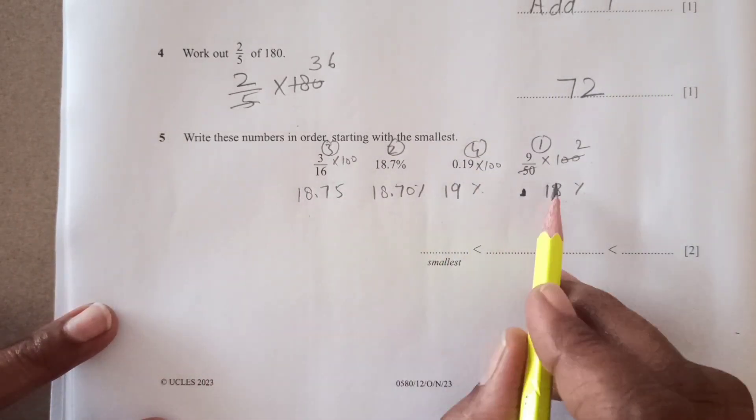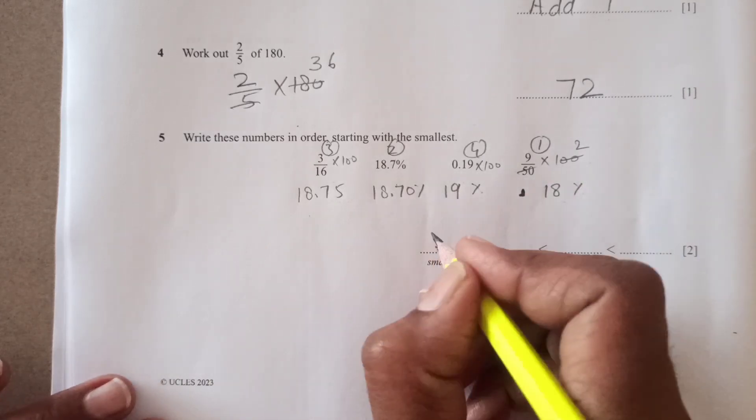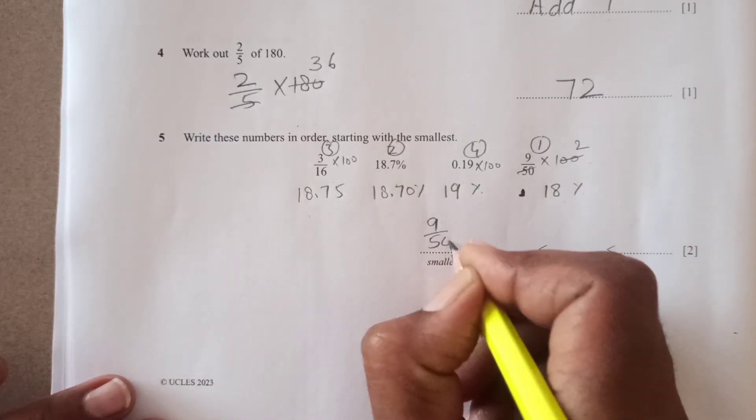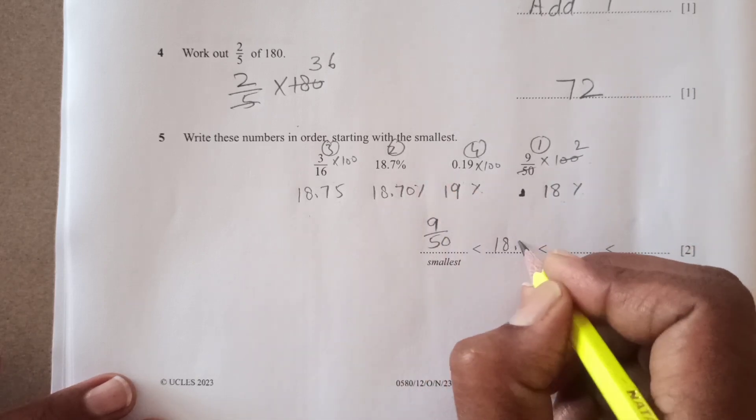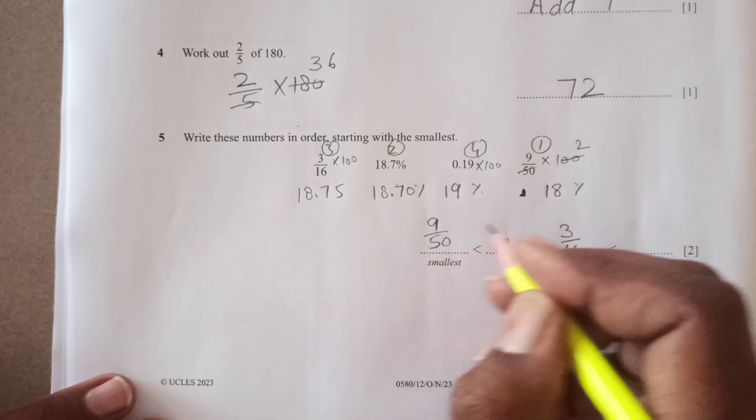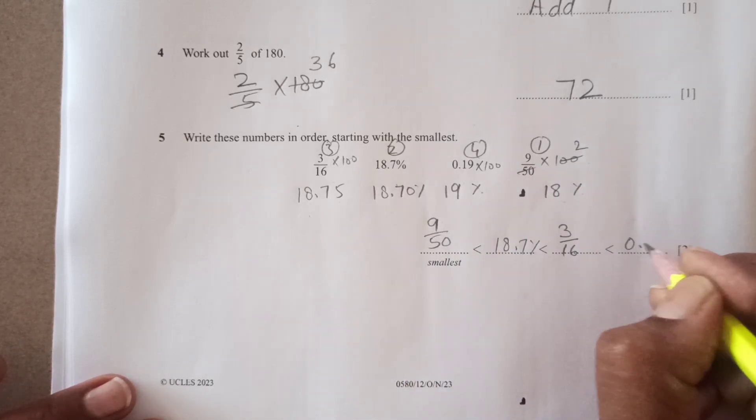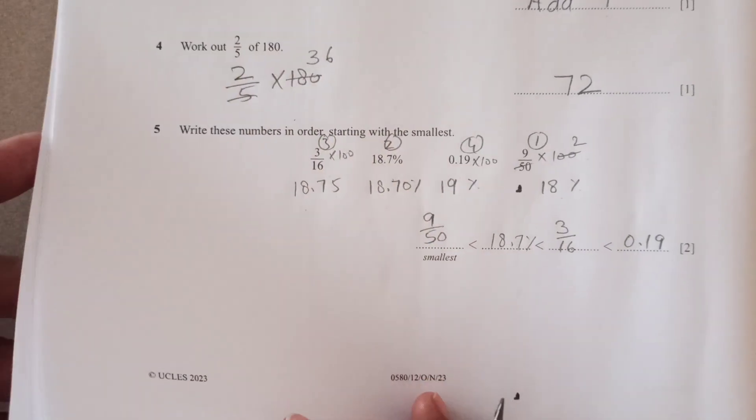So now write. Remember, you are going to write it into the original form. Number one was 9 over 50. Number two is 18.7 percent. Number three is 3 over 16. And number four is 0.19, right? So that was it.